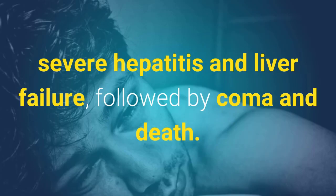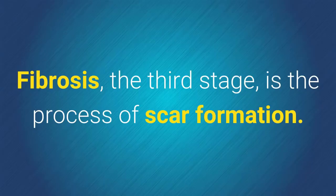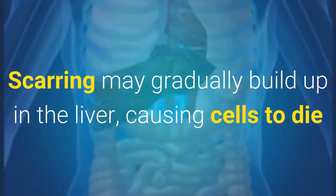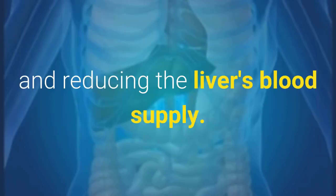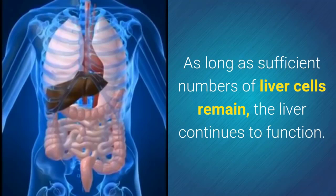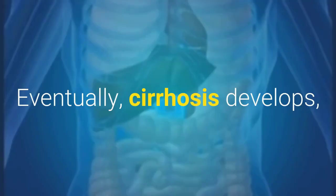The liver damage might progress to the next stage, hepatitis, where the liver is inflamed. In alcoholic hepatitis, there may be no symptoms, but problems such as jaundice, pain, nausea, and tiredness may occur. Occasionally, a sudden, heavy bout of drinking can cause severe hepatitis and liver failure, followed by a coma and death.